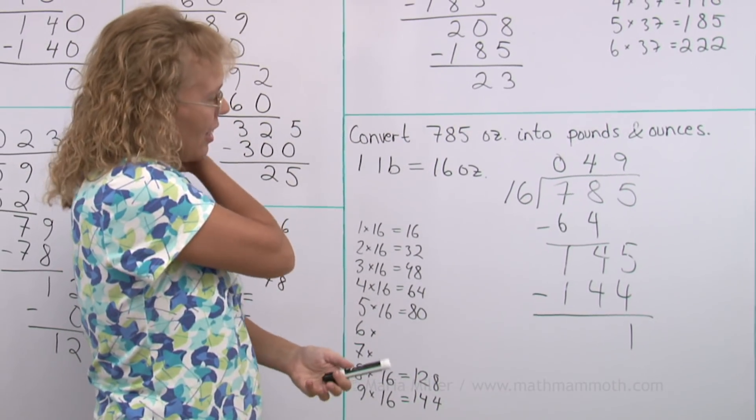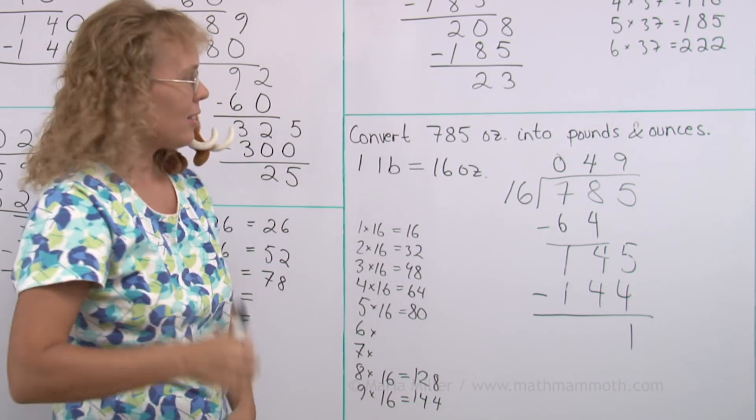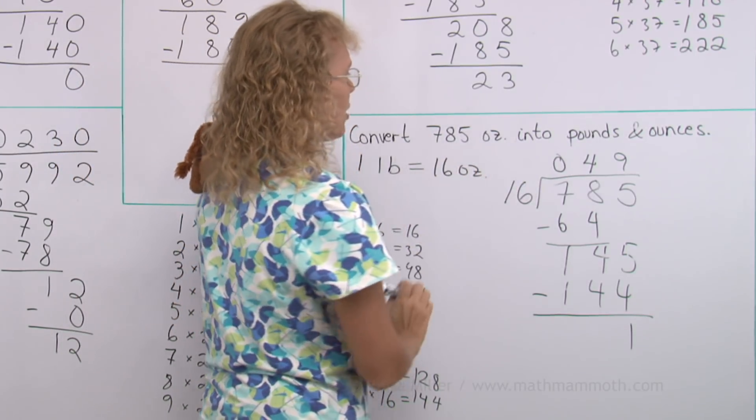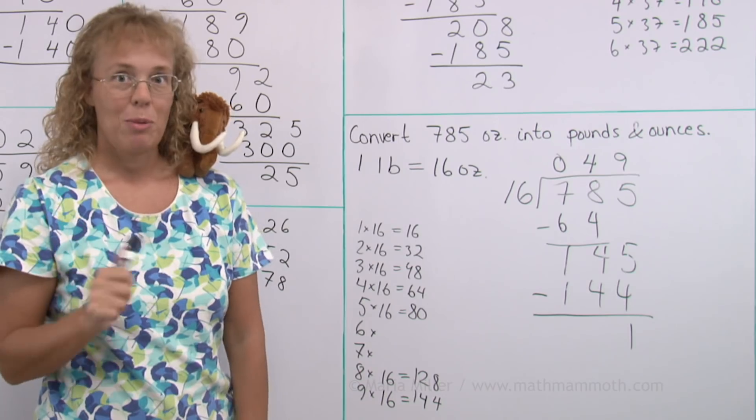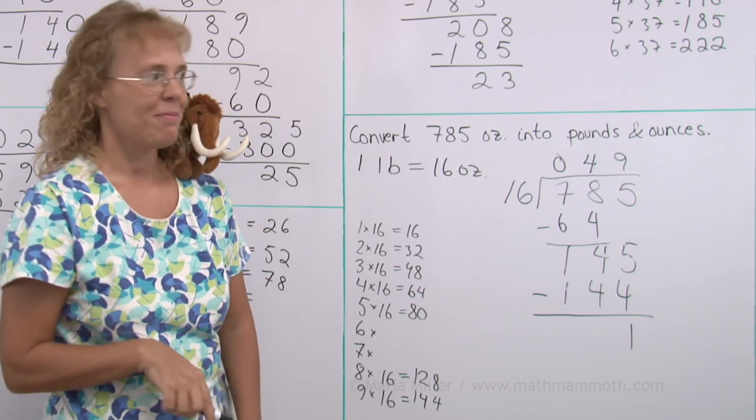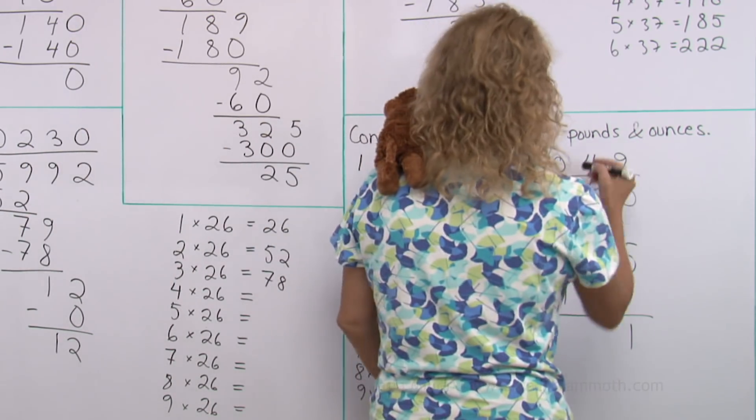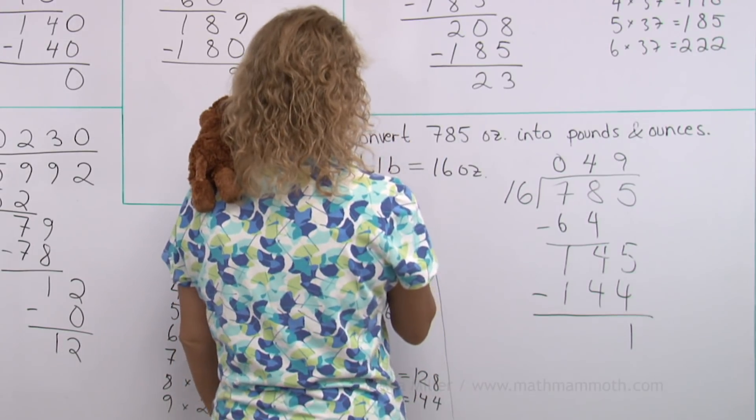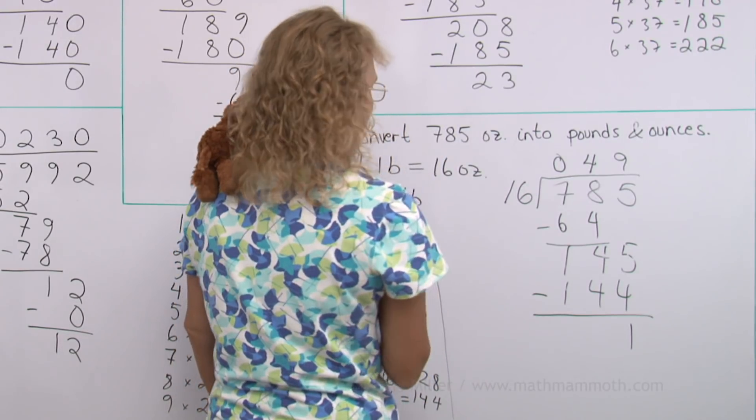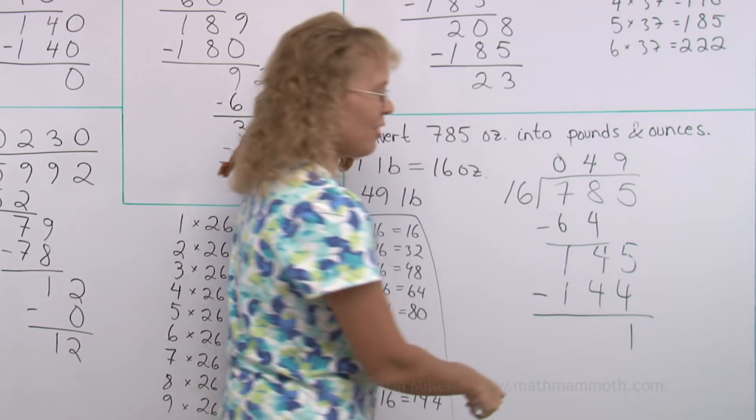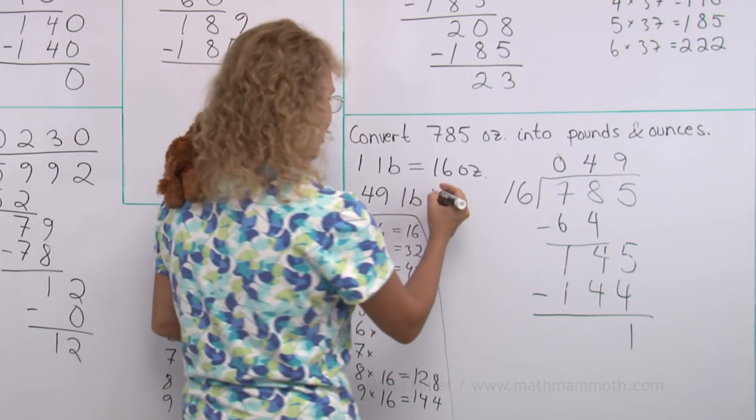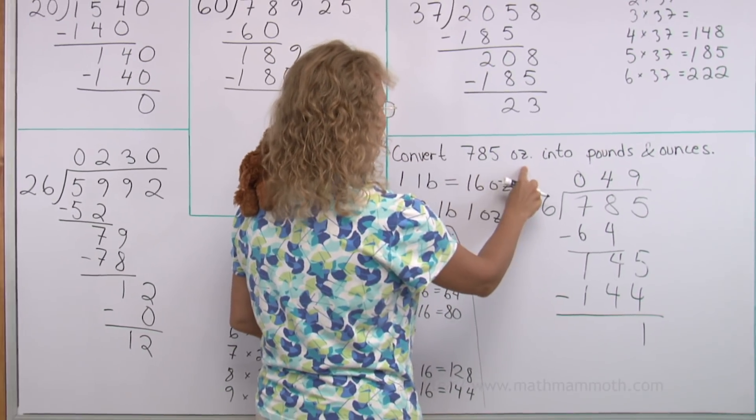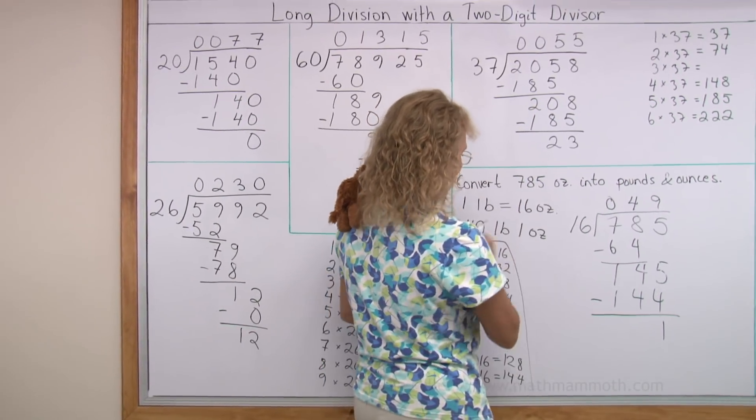Okay. Now we are all done, I guess. Right? What's the answer? Convert 785 ounces into pounds and ounces. So how many pounds is it? It's this number here. Yeah. It is 49 pounds. And then this one here is our leftover ounce, the remainder ounce. So I have to write it here. One ounce. 785 ounces is 49 pounds one ounce.